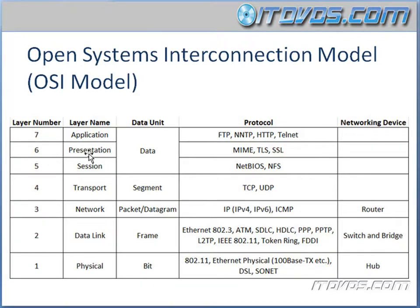The application layer is also responsible for identifying and establishing the availability of the intended communication partner and determining whether sufficient resources for the intended communication exist. The next layer, layer 6, is the presentation layer. This layer is responsible for data translation and code formatting — it's kind of like a translator so that if any conversion of the data needs to happen, it happens at the presentation layer, such as encryption. Some examples of protocols that work on the presentation layer are MIME, TLS, or SSL. SSL we're probably familiar with — if we go to a website that uses HTTPS to encrypt the data as it gets sent to and from the server, the actual encryption process happens at the presentation layer.